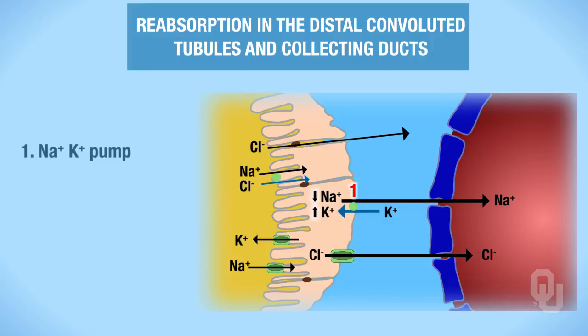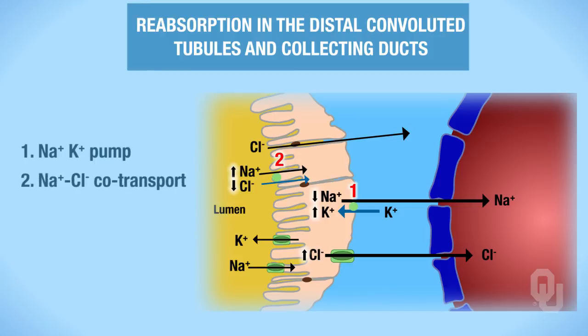So once we've set that up, we can look at the lumen of your distal convoluted tubule or the collecting duct and look at how sodium is moving. Sodium is at a high concentration in the lumen; chloride ions are at a low concentration in the lumen. Sodium is moving from high to low, chloride ions are moving from low to high. So because we're moving two solutes — one along a gradient and using that energy to drive the other ion against its gradient — this type of transport at number two is sodium-chloride co-transport.